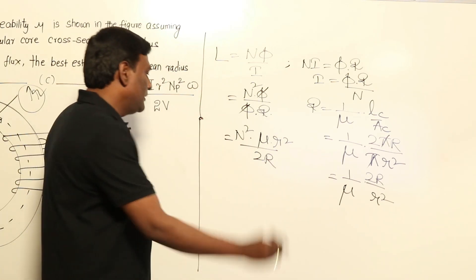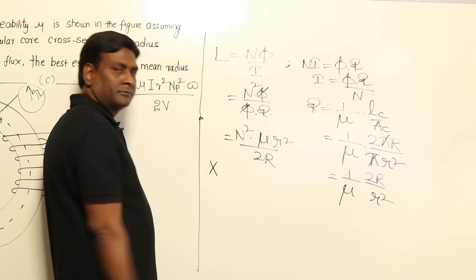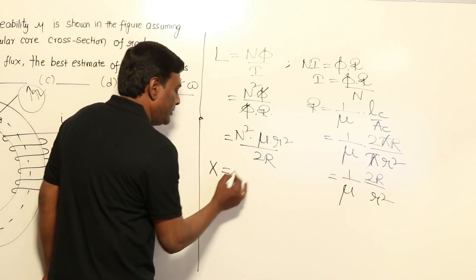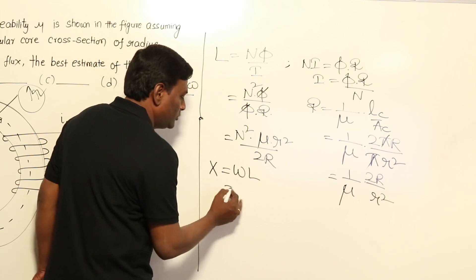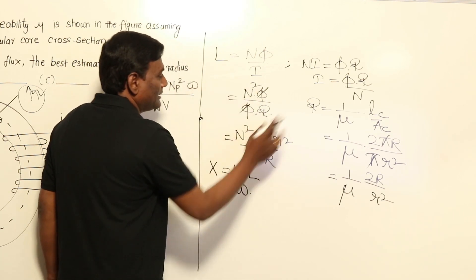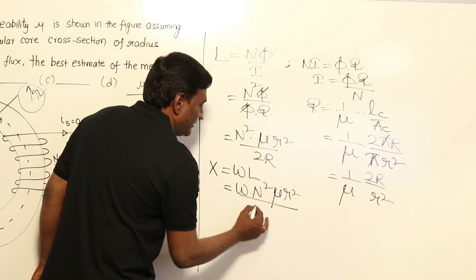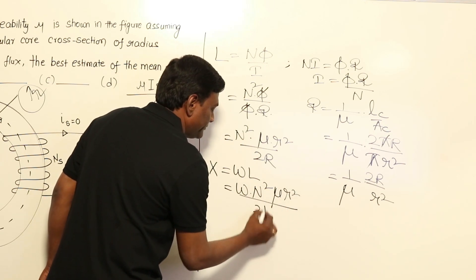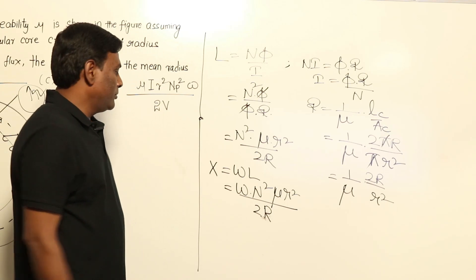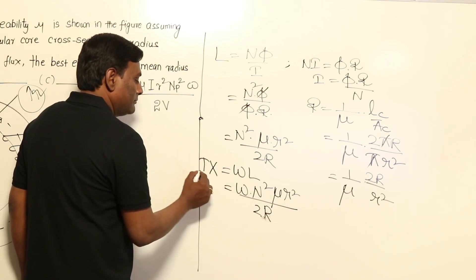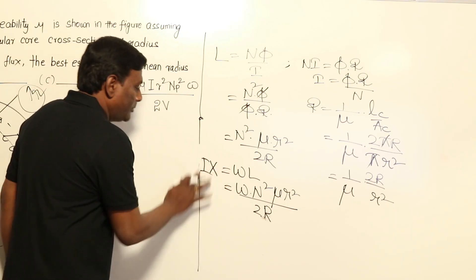Now let us calculate reactance X_L. Reactance is ωL, so this is going to be ω × N² × μ × r²/(2R_m). Current multiplied by reactance is going to be voltage.